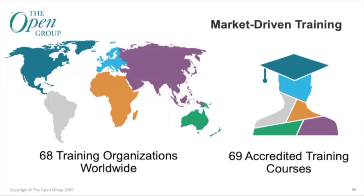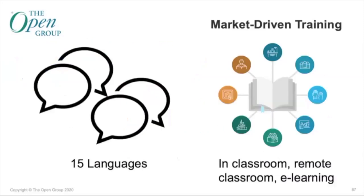Moving into the first part of the talk, I want to talk about TOGAF training. The Open Group has 68 training organizations worldwide offering accredited training. Each course is assessed by the Open Group to ensure it meets quality standards. Our accredited training is delivered in 15 languages — a fair selection that covers most languages you would need. We have training available in a number of delivery formats, including classroom, virtual, e-learning, and blended learning.